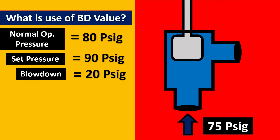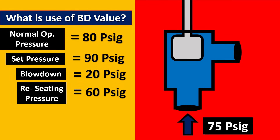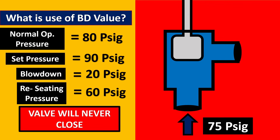For example, if the blowdown is 20 PSIG, the relief valve will not close until the pressure drops to 60 PSIG. That means if your normal operating pressure is 75 or 70 PSIG for a long time, your relief valve will just never close. Is this not very hazardous? Yes, it is.